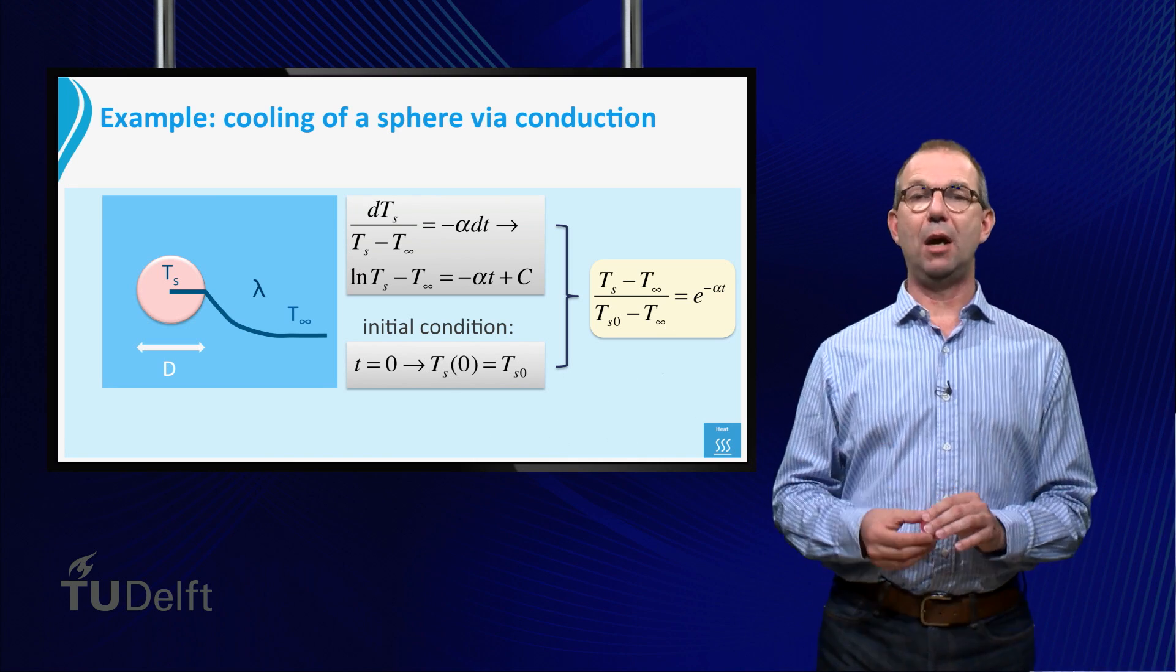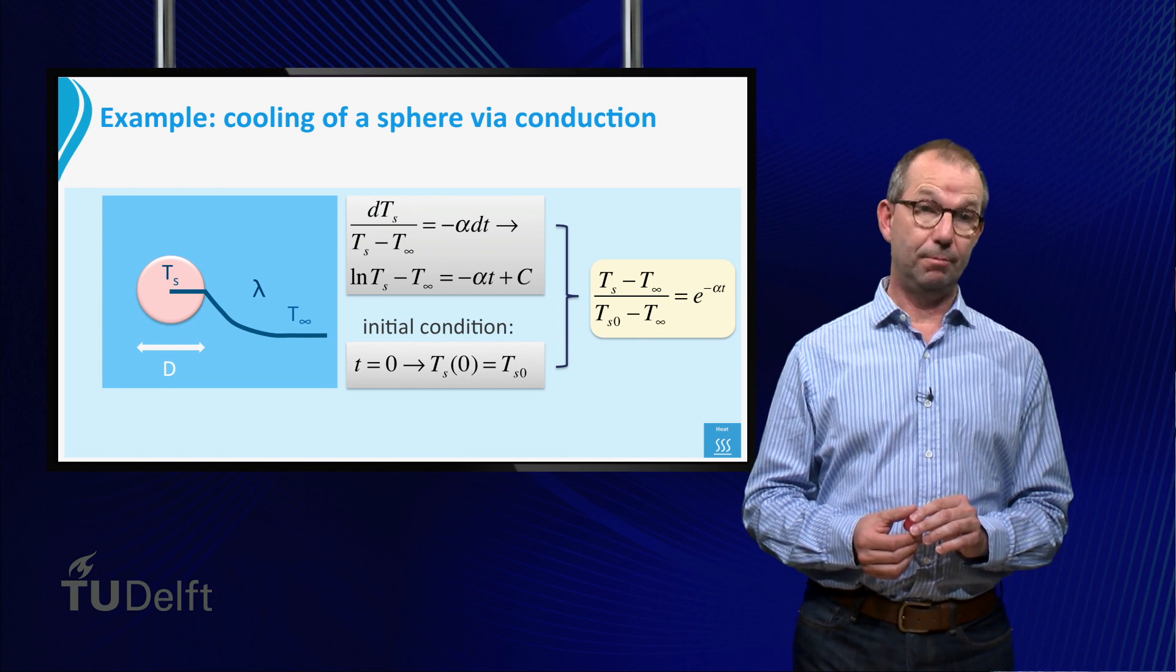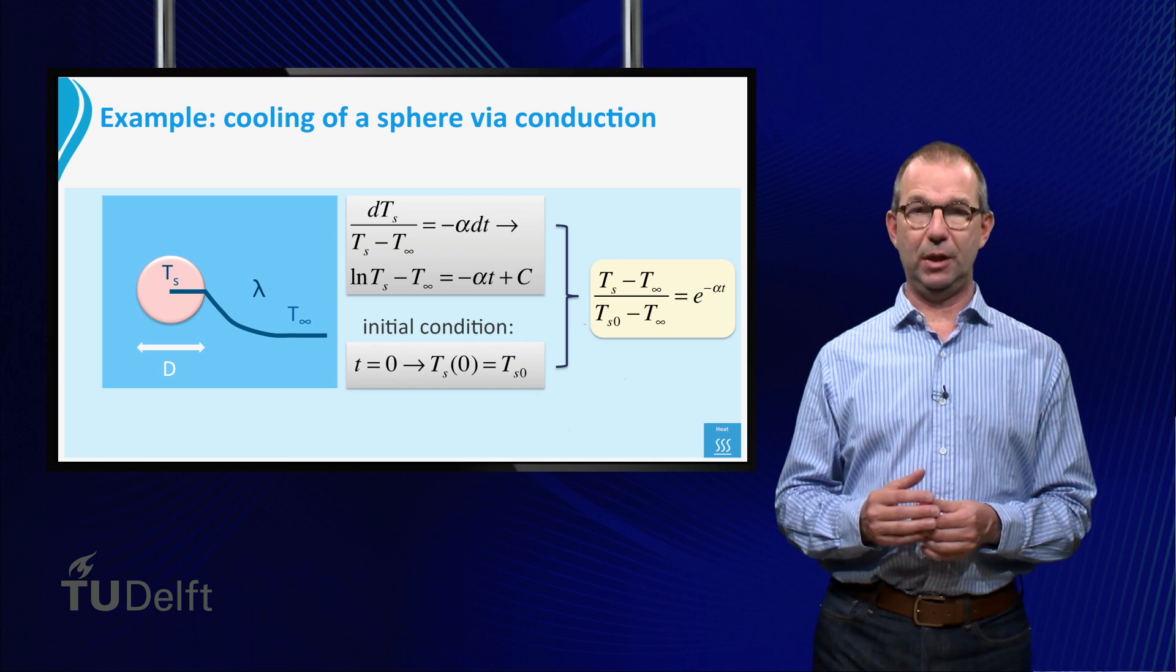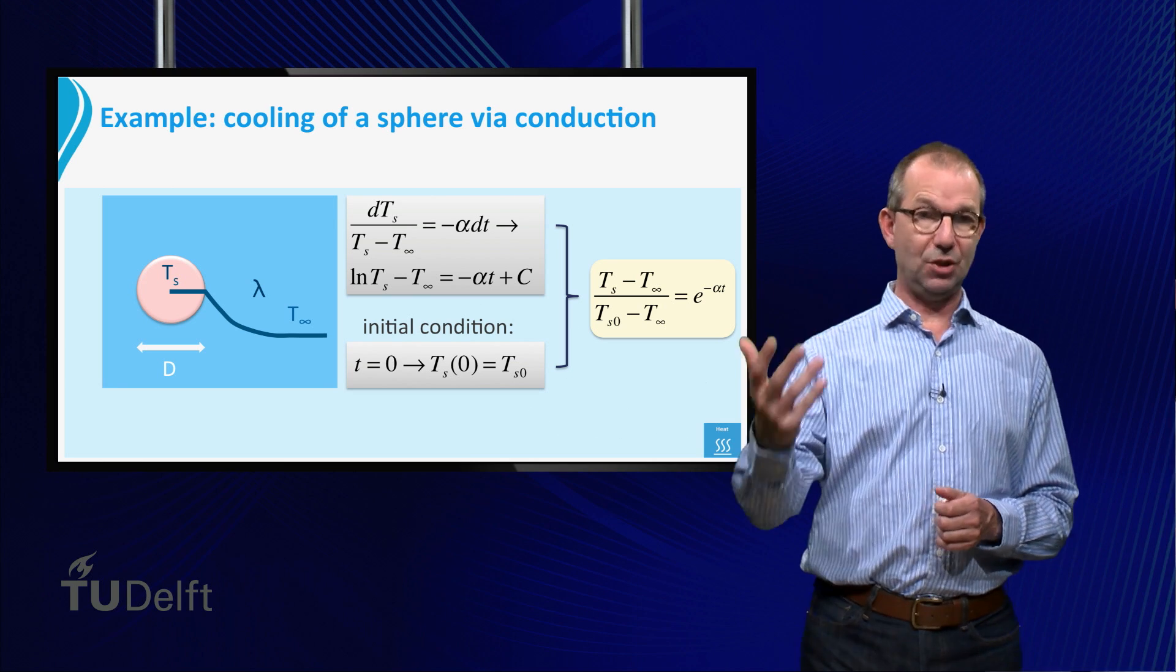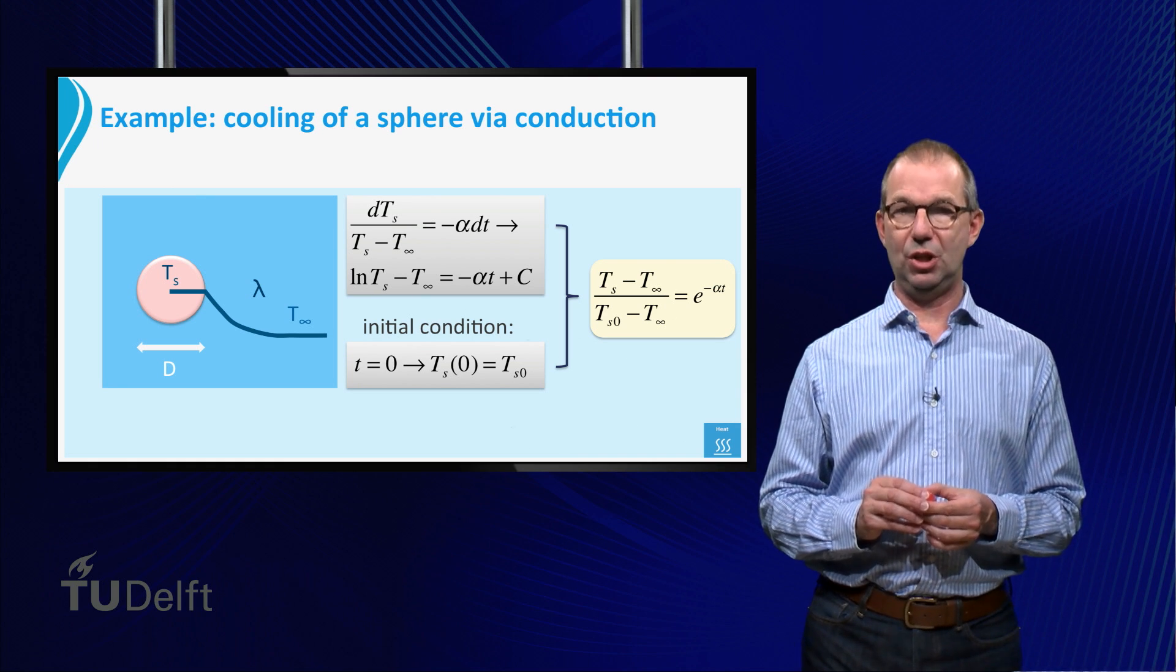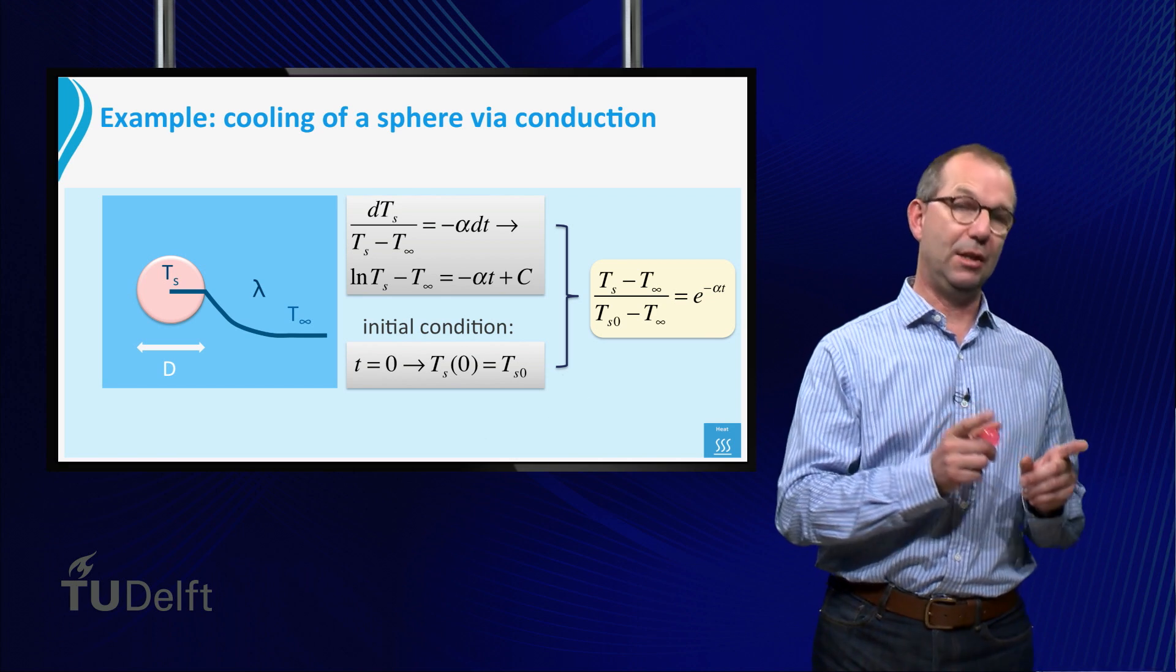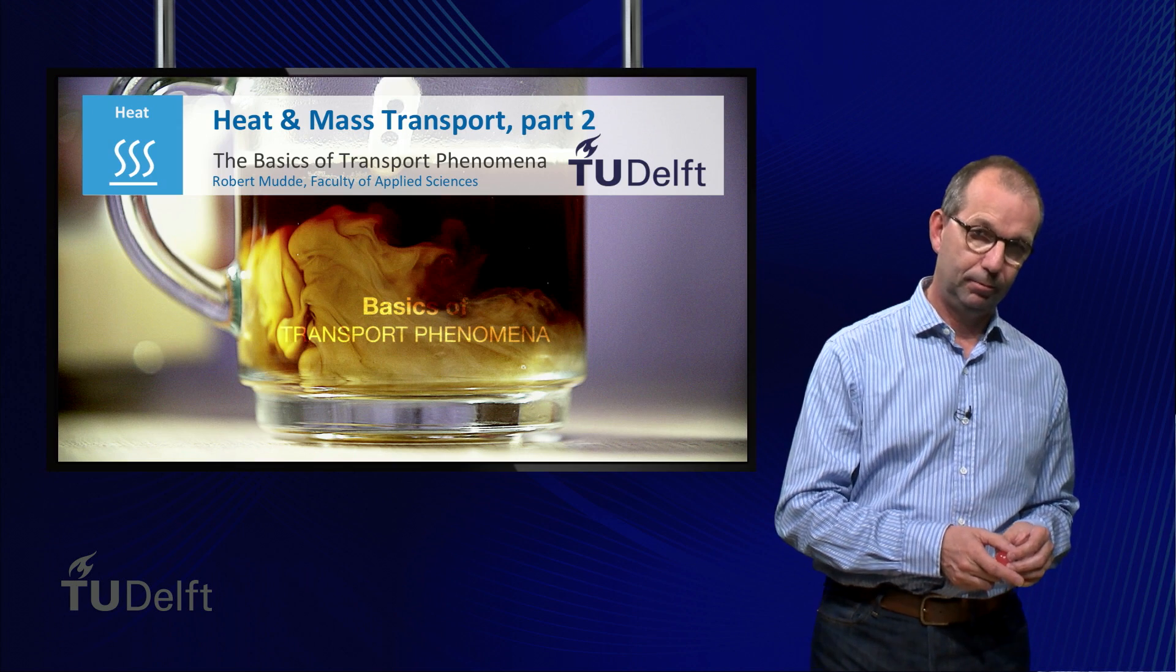Now we can write down the solution of our problem, which you see on the sheet. The temperature of the sphere decreases as an exponential function of time. Indeed, from this solution we can see that the cooling down of the sphere goes slower and slower.